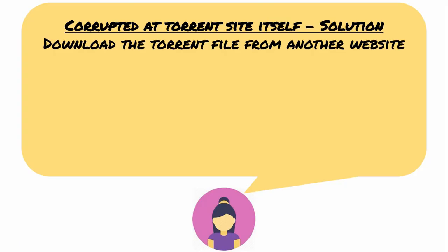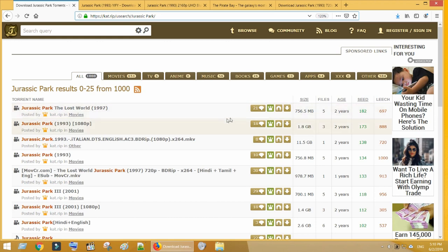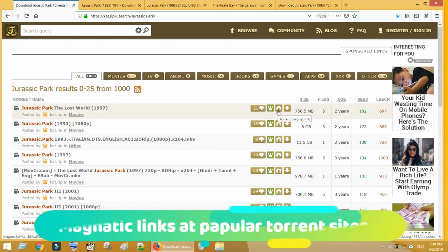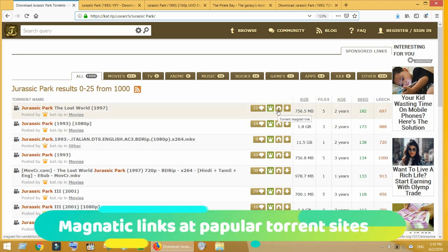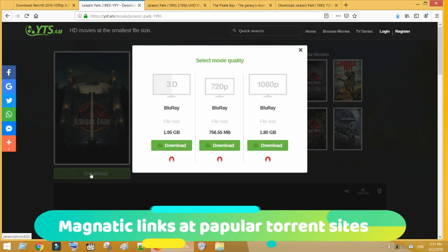The next solution worked for me — I hope it works for you as well. Try downloading the movie or game using a magnet link. Nowadays, all popular torrent websites provide a magnet link option, and you can very well use this to download your movie or game.